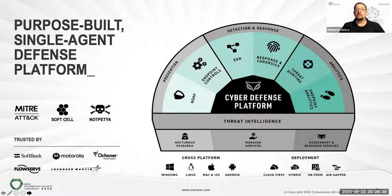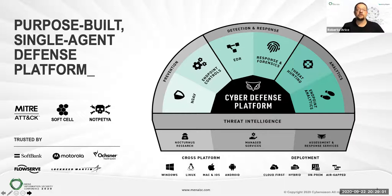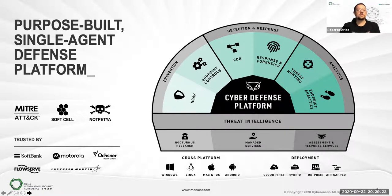Cybereason is a purpose-built single-agent defense platform. With a single agent — a piece of software you install on an endpoint, meaning a laptop, desktop, server, Linux, Mac, iOS, Android — it performs a multitude of functions depending on what you need. Those functions could be preventative capabilities, next-gen AV, endpoint controls, signature-based AV, ransomware prevention, EDR detection and response, forensic investigations, incident response, and analytics for threat hunting. All underpinned by a single platform — no need to deploy new software or create new configurations.